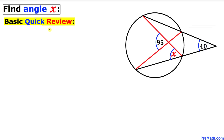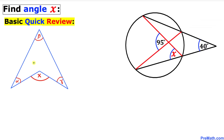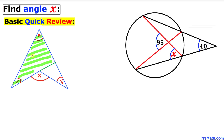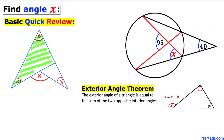Let me go over this basic quick review. Let's focus on this concave quadrilateral — its interior angles are alpha, beta, and gamma — and we are going to find the value of angle x in terms of alpha, beta, and gamma. Now let's focus on this shaded triangle and recall the exterior angle theorem: the exterior angle of a triangle is equal to the sum of the two opposite interior angles. Here x is our exterior angle, equal to alpha plus beta. So for this shaded triangle, this angle is our exterior angle, equal to alpha plus beta.